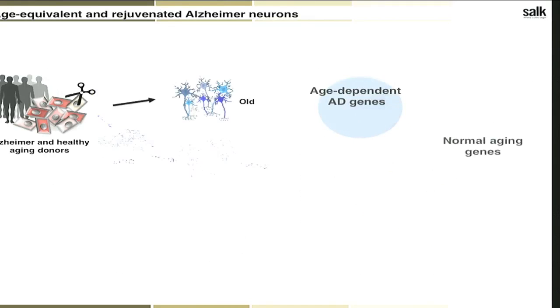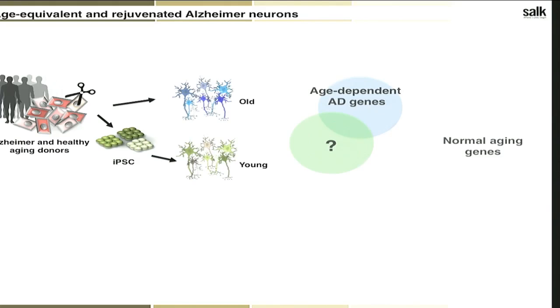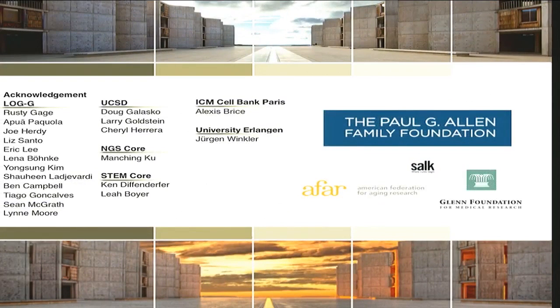We are currently generating and analyzing RNA-seq data from rejuvenated iPSC-derived neurons as well, to see if this strong AD-specific transcriptional profile withstands the rejuvenation process or becomes erased together with the aging component. I hope to share more findings next time. I'd like to thank Rusty Gage, helpful partners in the lab and at UCSD and the clinics, and the Paul G. Allen Foundation for enabling this project.